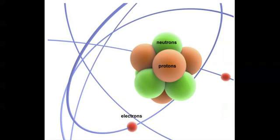We now know that inside the atom is a nucleus. The nucleus is at the center; it's a very dense region. Inside the nucleus are the subatomic particles called the positively charged protons and the neutrally charged neutrons. These two subatomic particles are bound by nuclear charge and are the main contributors of the mass of the atom.